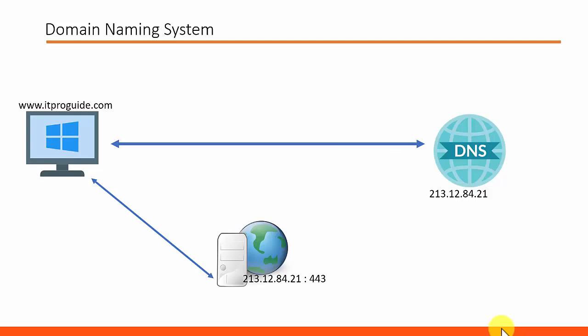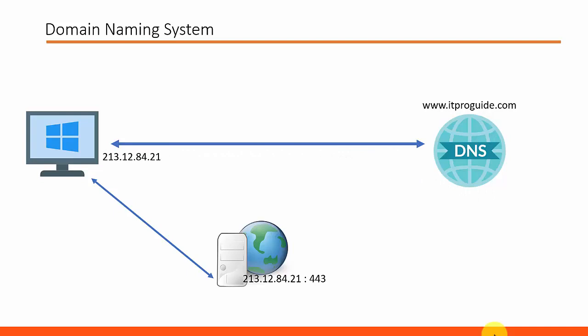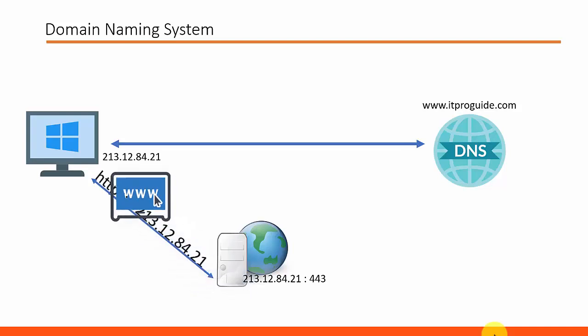Before we dive into Big IP DNS, it is necessary to have a clear idea about DNS and how DNS works. DNS, domain naming system, translates domain names into IP addresses. For example, when you visit itproguide.com, a DNS server hosting itproguide.com will answer you with the IP address of the website. Then your browser makes an HTTPS connection and a webpage will appear on your screen.